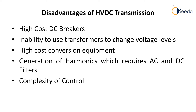The third disadvantage is the high cost of conversion equipment. Rectifier stations at the sending end and inverter stations at the receiving end are hugely expensive, which is why HVDC is used only for long-distance transmission — the cost is not viable for short-distance use. The fourth disadvantage is generation of harmonics. Harmonics must be filtered out using AC and DC filters, otherwise they affect both consumers and generating stations. Finally, there is complexity of control in HVDC systems, requiring specialized equipment.